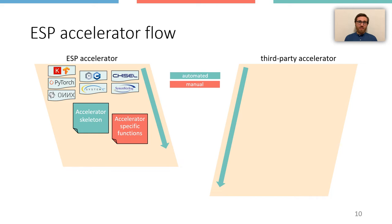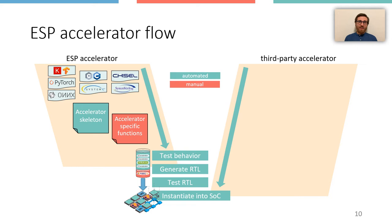At this point, the accelerator and all the test applications are ready. All the next steps are about testing and optimizing. And finally, the accelerator becomes part of the IP library and it can be instantiated in an SoC with the ESP GUI.